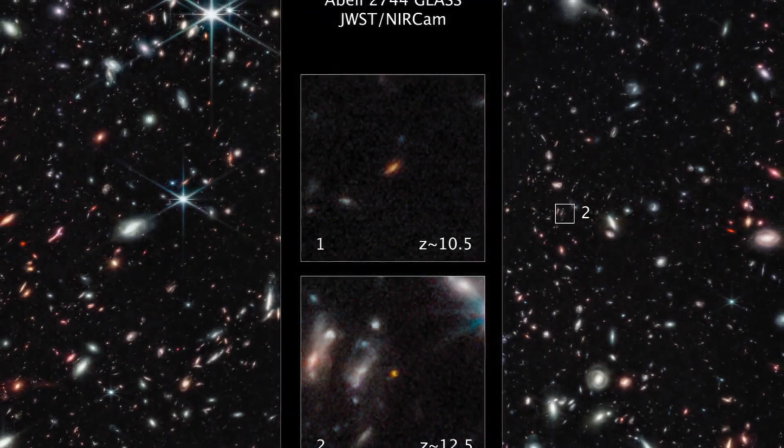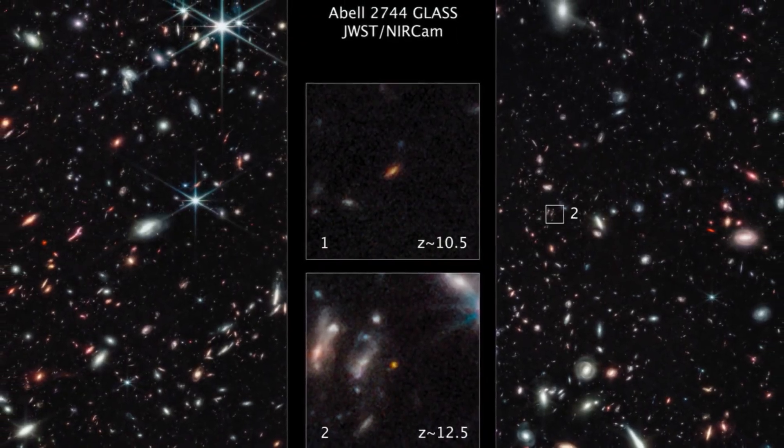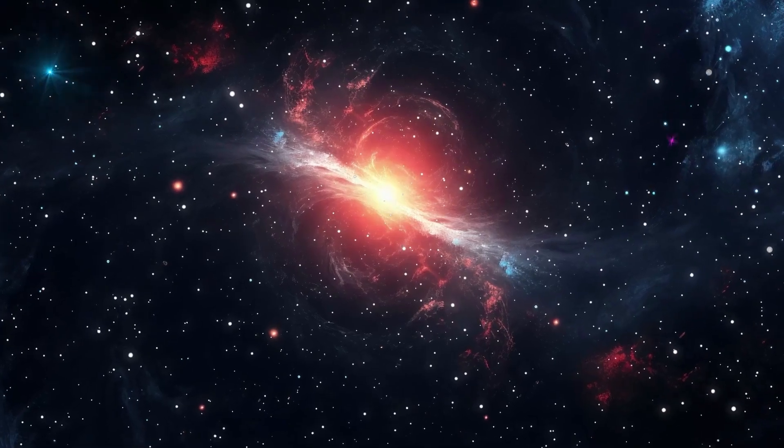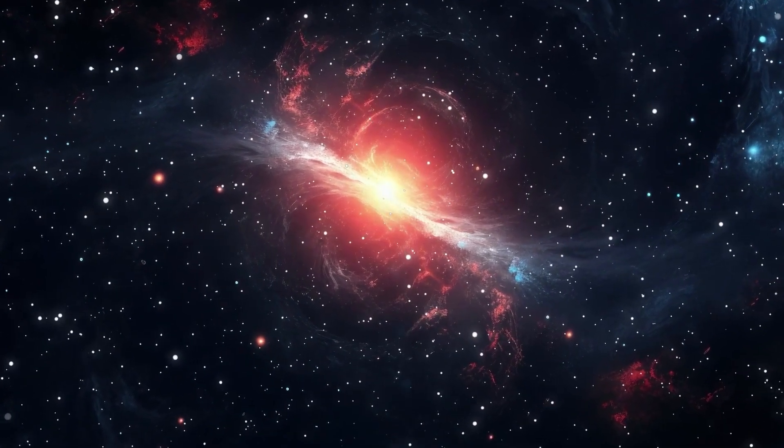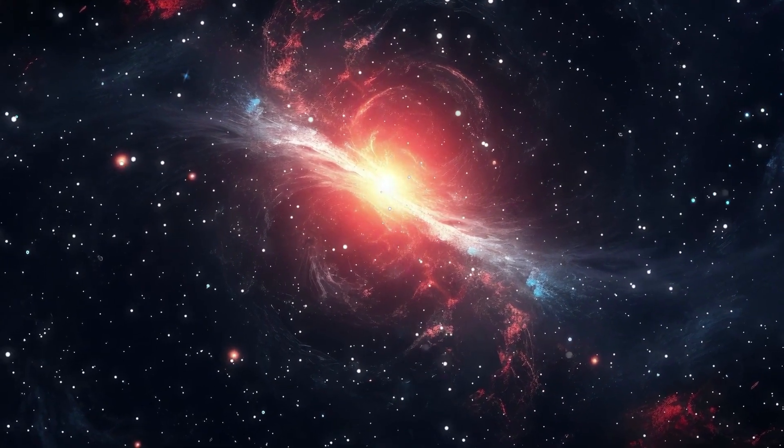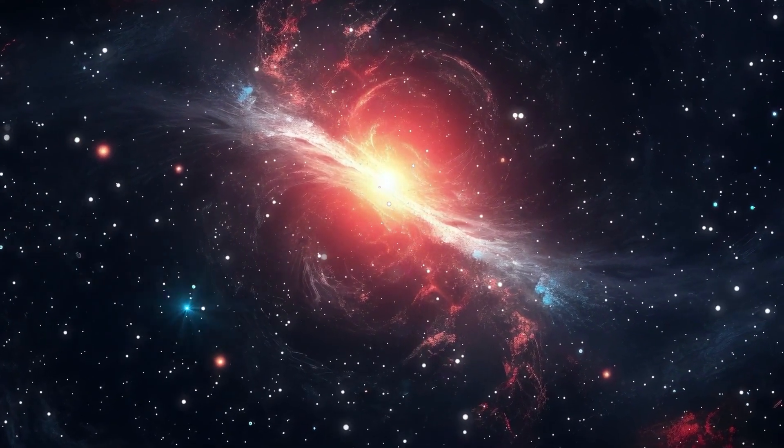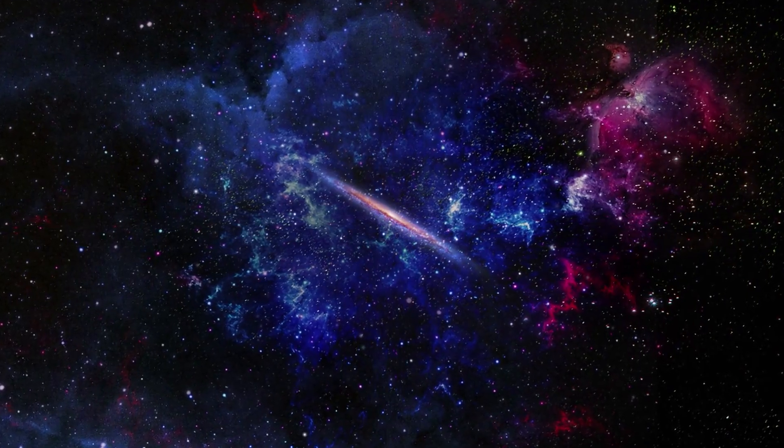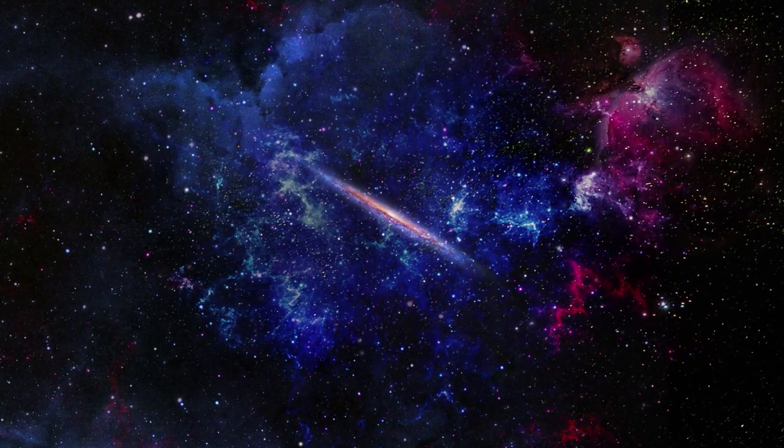GLASS-Z-12, also called GHZ-2, is another example. It's spectroscopically confirmed redshift is about 12.34, which means it existed only about 360 million years after the Big Bang. It has very low dust content, and while metals are present, they are minimal, making it more primordial.